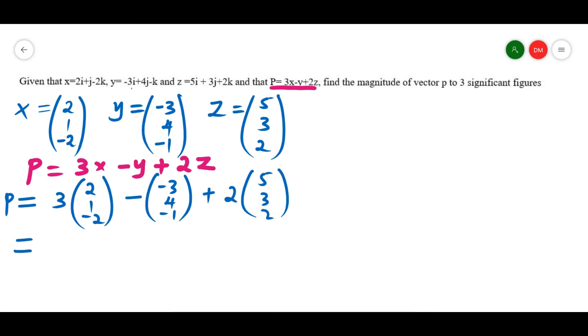So multiplying everything, opening this bracket. 3 times 2 is 6, 3 times 1 is 3, 3 times negative 2 is negative 6. Minus, this is negative 3, 4, negative 1. Plus, this is 2 times 5 is 10, this is 6, this is 4.